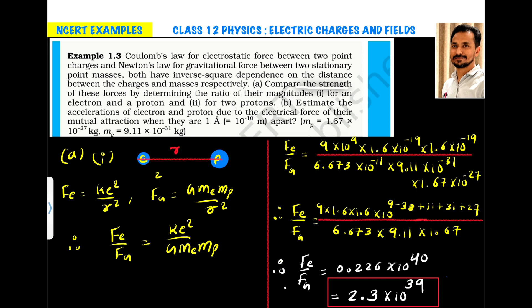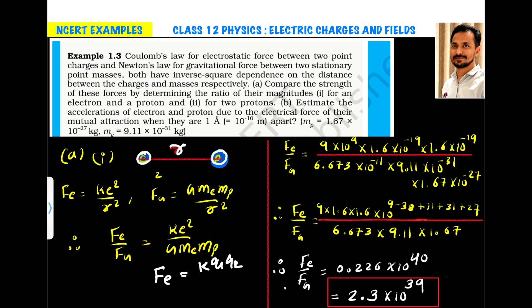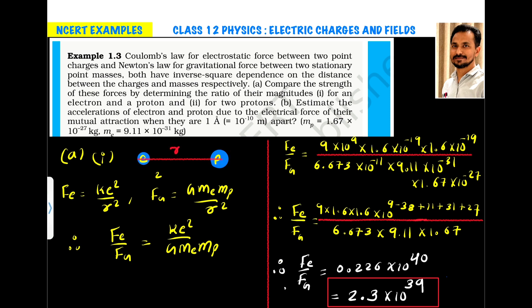What is asked? Compare the strength of these forces by determining the ratio of their magnitudes. For the first system, we have an electron and a proton separated by distance R. From Coulomb's law, Fe = KQ₁Q₂/R². Here, the charge of the electron is e and the charge of the proton is also e, so it becomes Ke²/R².